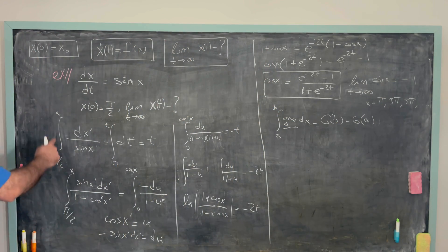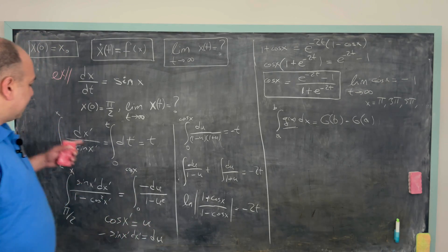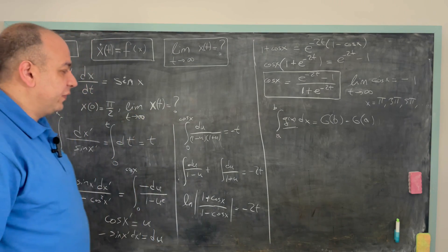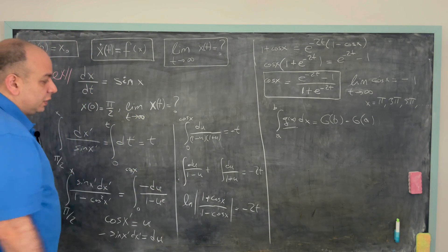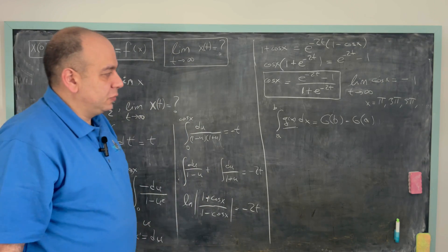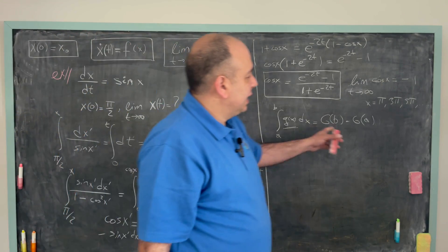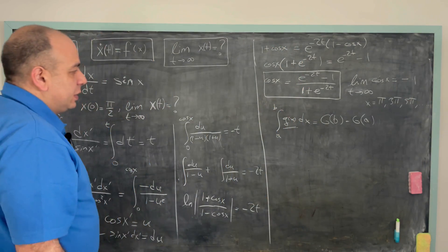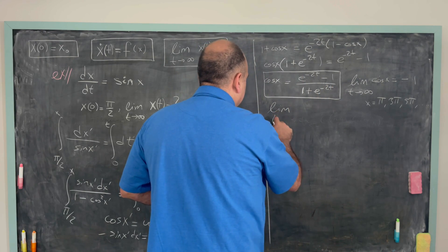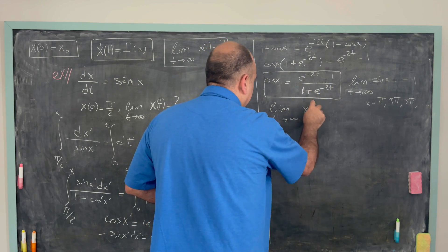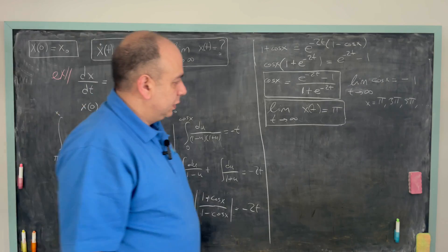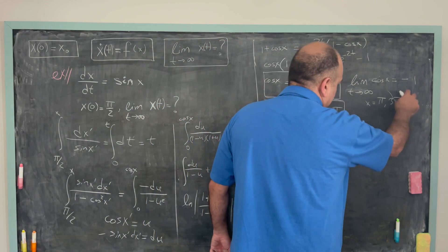Between π/2 and π, 1/sin x is continuous, so we can validly apply the fundamental theorem as we did. This means x cannot be 3π, 5π, or 7π. We conclude that the limit as t→∞ of x(t) equals π. This is our answer — the other options are not possible.